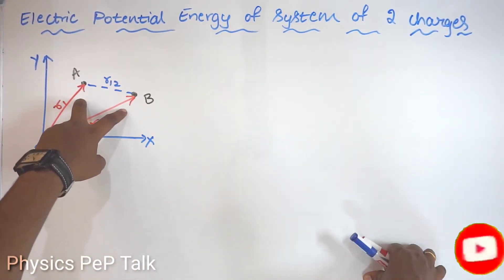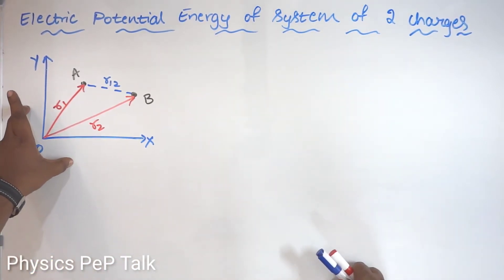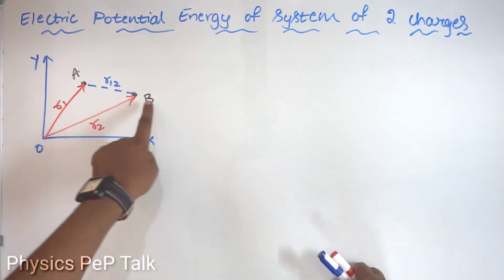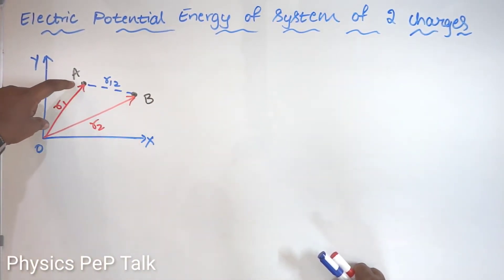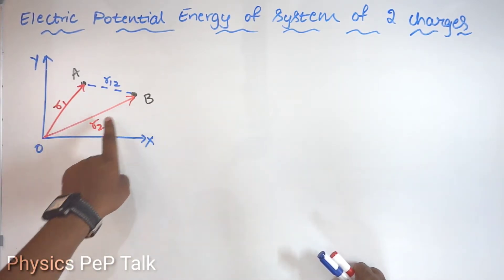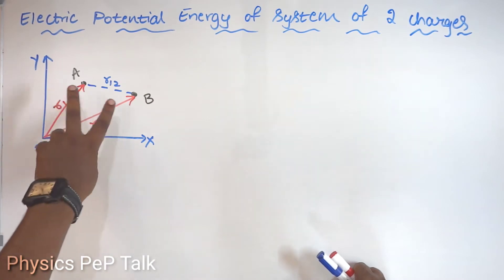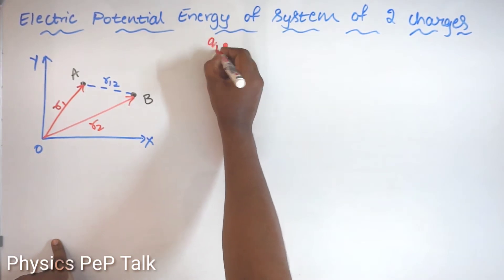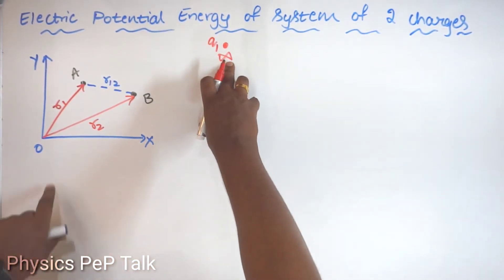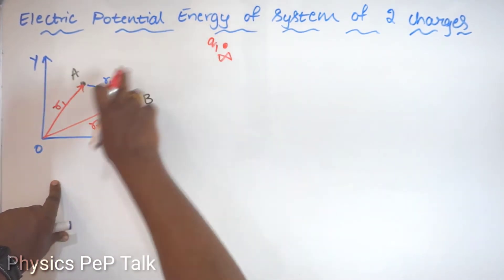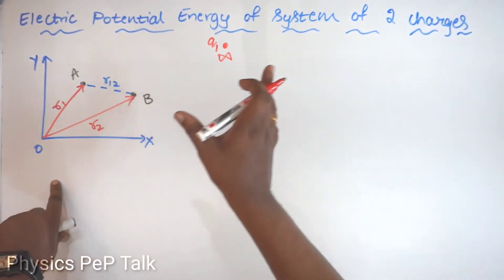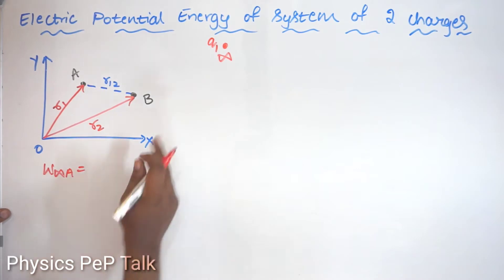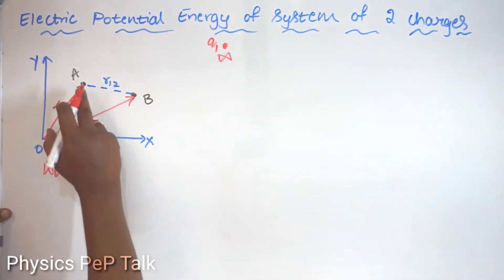Now, what happens if we consider two charges? I will consider a rectangular coordinate system with an x-axis and y-axis. I will consider two points A and B. Let point A be at a distance of R1 from the origin, and let point B be at a distance of R2 from the origin. I will consider a charge Q1 which is at infinite distance. I will bring this charge Q1 from infinite distance to point A, for which I have to do some work. I will call that work as the work done in bringing a charge from infinite distance to point A, which is nothing but the charge into the potential at point A.